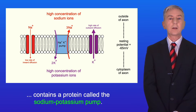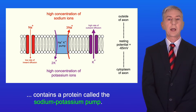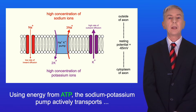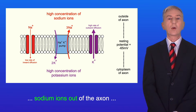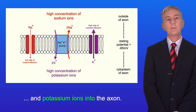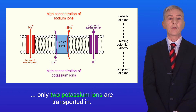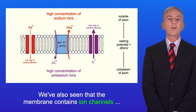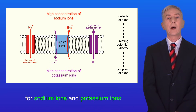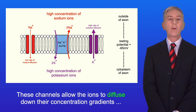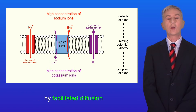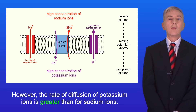The axon membrane contains a protein called the sodium-potassium pump. Using energy from ATP, the sodium-potassium pump actively transports sodium ions out of the axon and potassium ions into the axon. For every three sodium ions transported out, only two potassium ions are transported in. The membrane also contains ion channels for sodium and potassium ions, which allow the ions to diffuse down their concentration gradients by facilitated diffusion. However, the rate of diffusion of potassium ions is greater than for sodium ions.